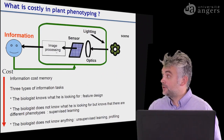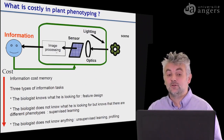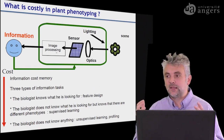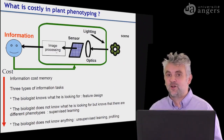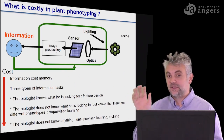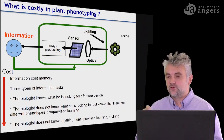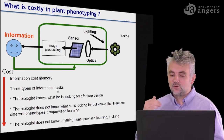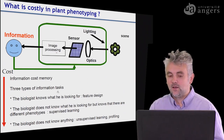We now reach the final stage of our computer vision pipeline, which is information — the stuff that really interests the biologist. This information also costs money somehow. On a basic level, information costs memory. If you acquire giga- or tera-octets of data, you will need somewhere to store it. So if you plan to launch a huge acquisition campaign, please contact your IT center to ensure you have enough memory and are not forced to buy hard drives afterwards.